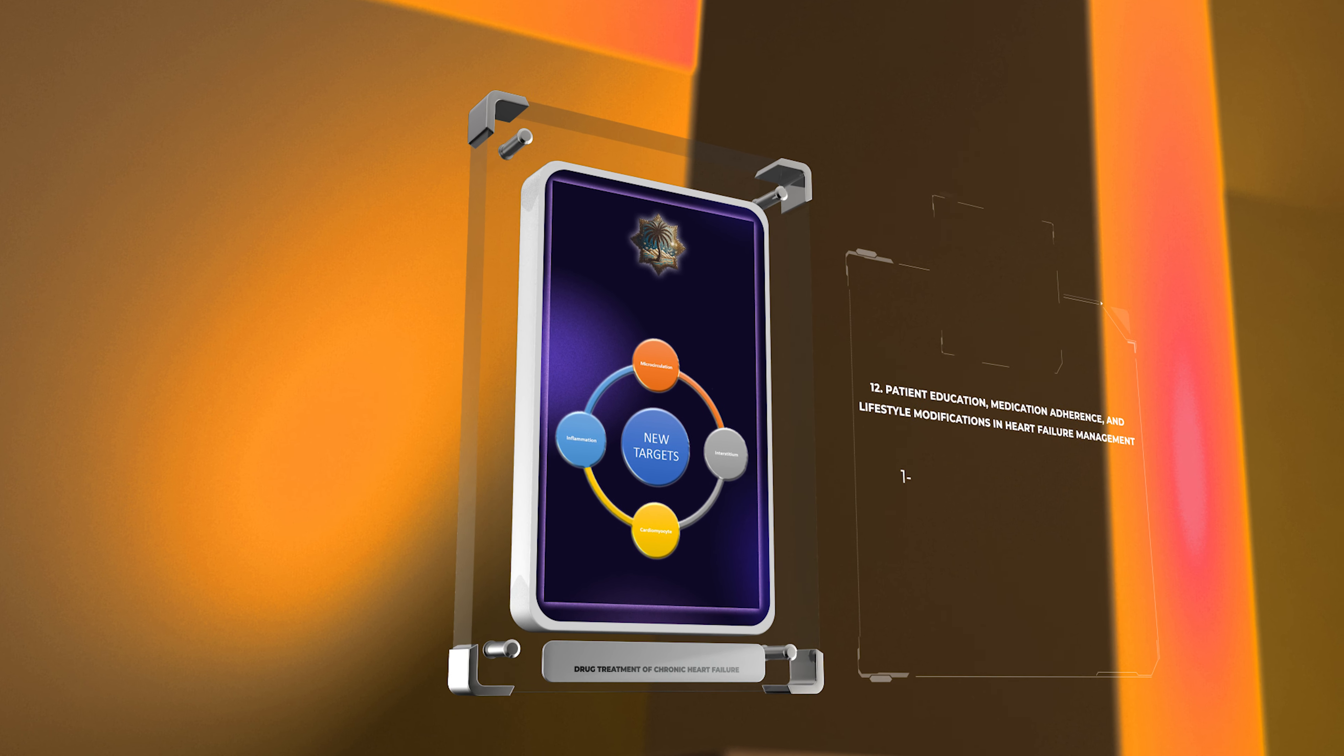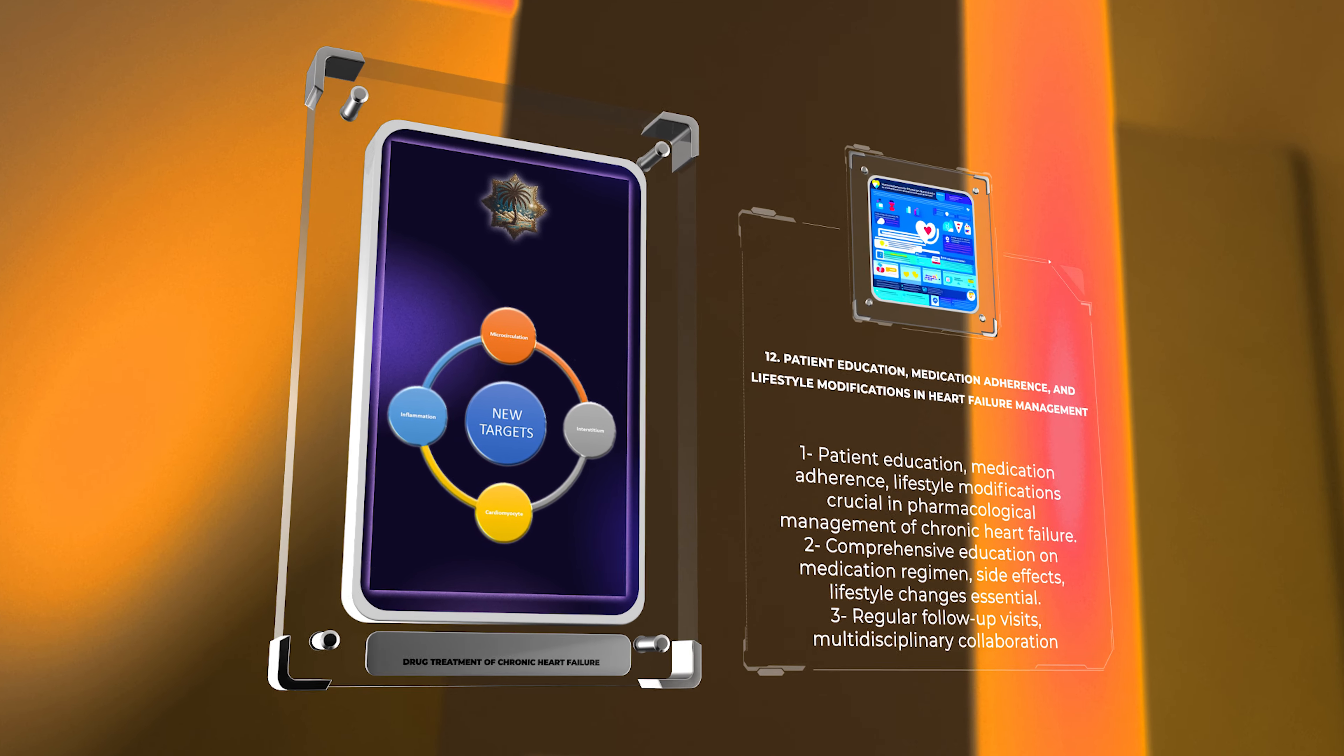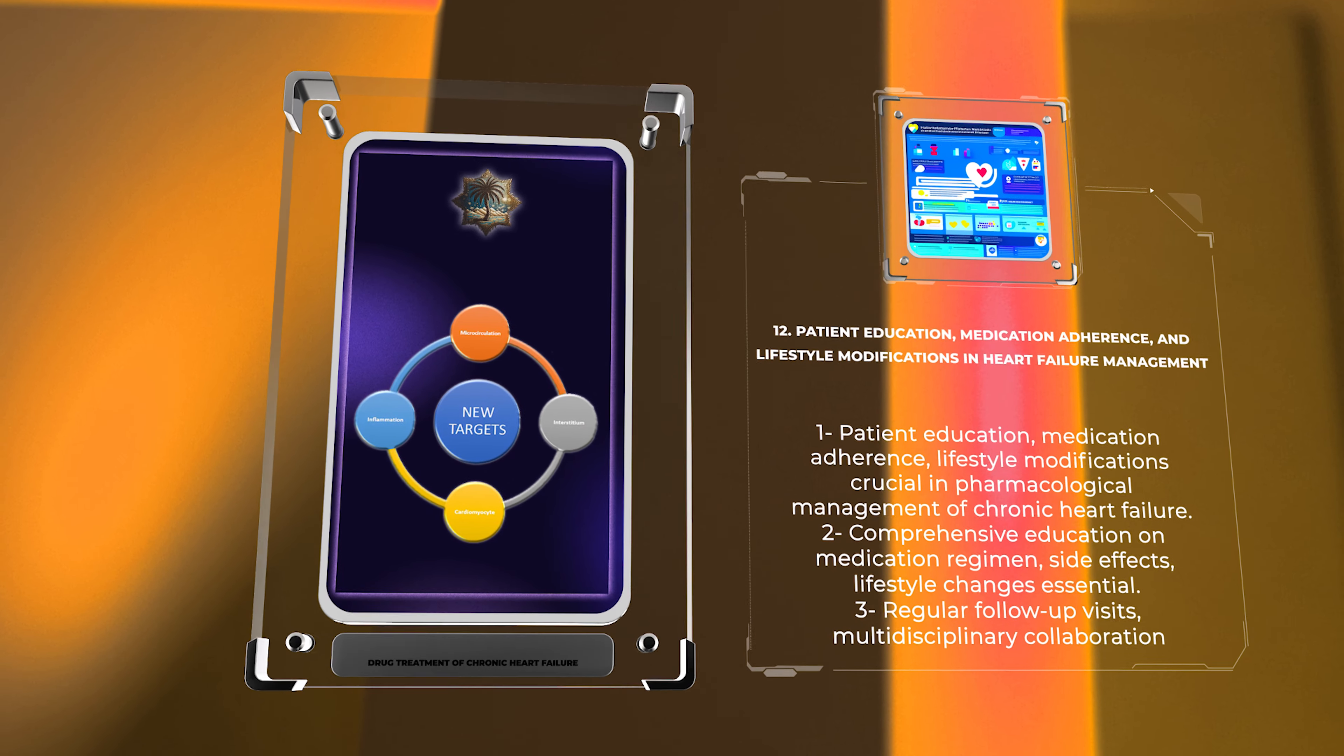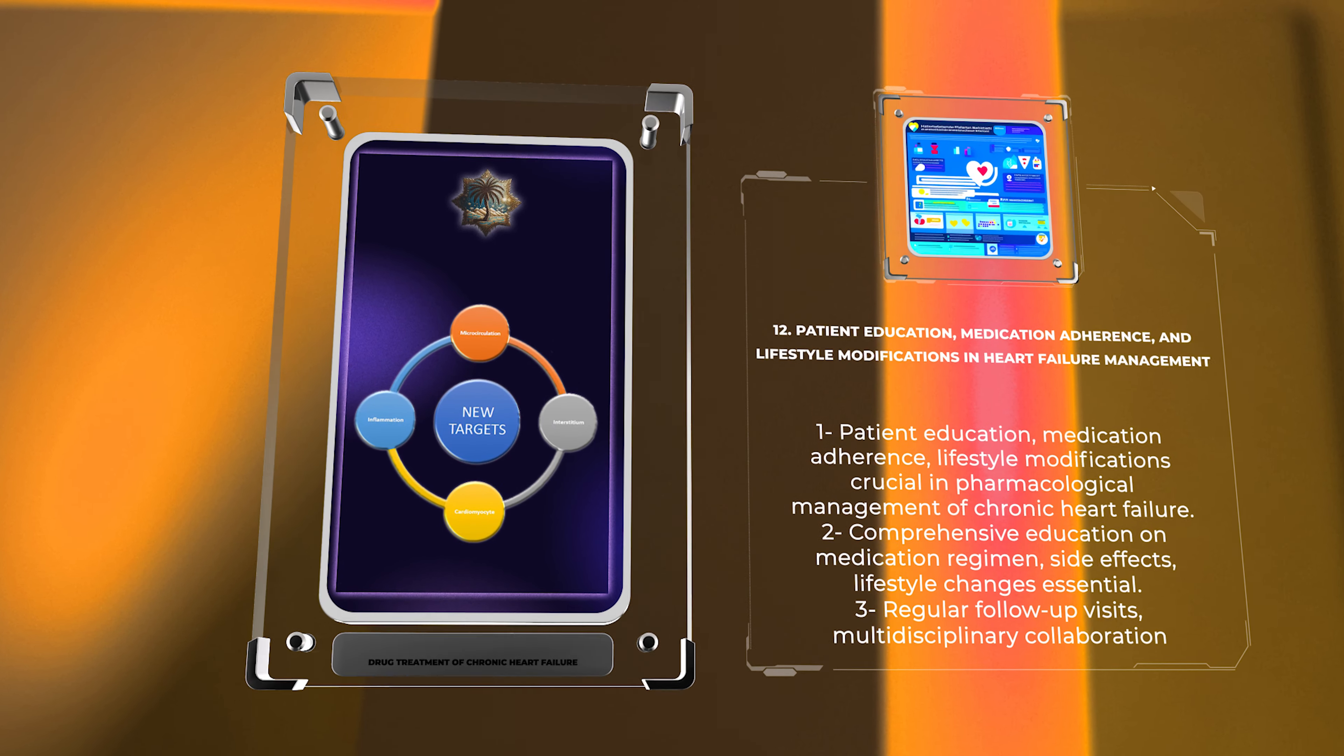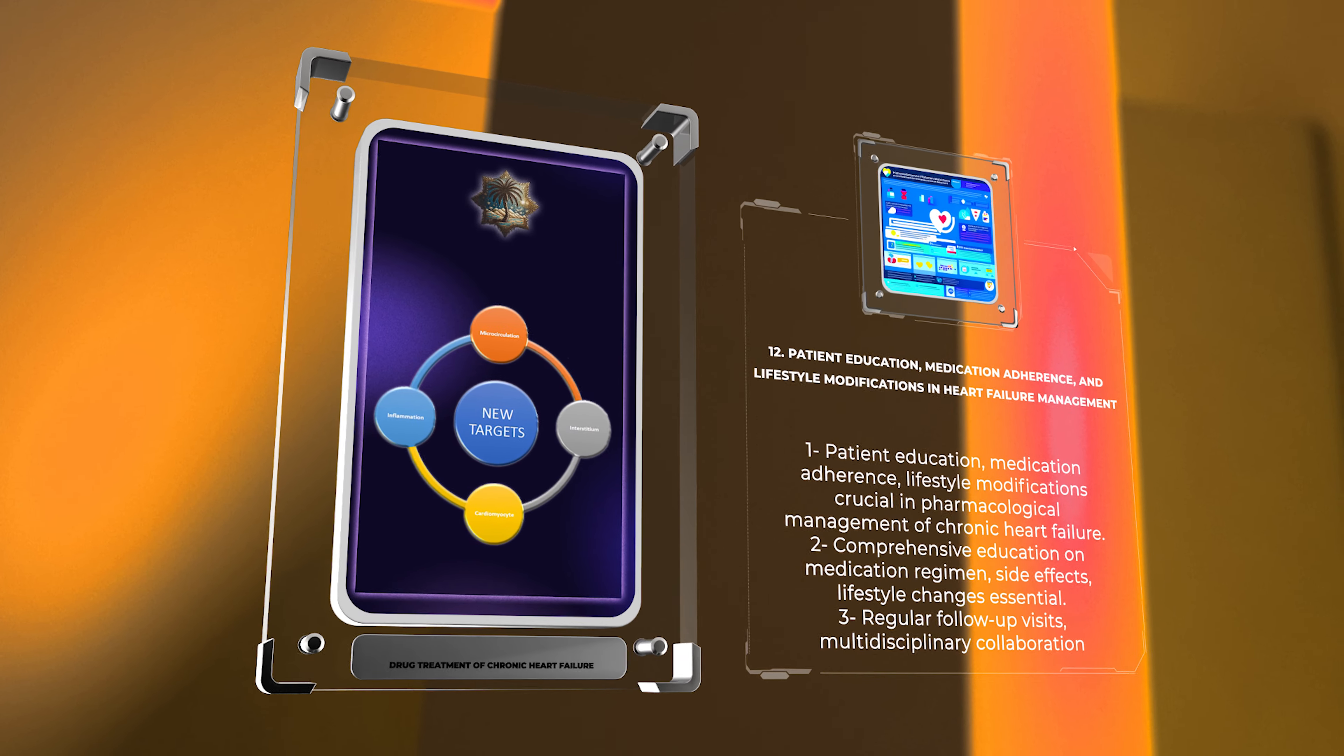In summary, patient education, medication adherence, and lifestyle modifications are crucial in the pharmacological management of chronic heart failure. Healthcare professionals should provide comprehensive education on medication regimen, side effects, and lifestyle changes. Regular follow-up visits and multidisciplinary collaboration are also important for optimal patient outcomes.